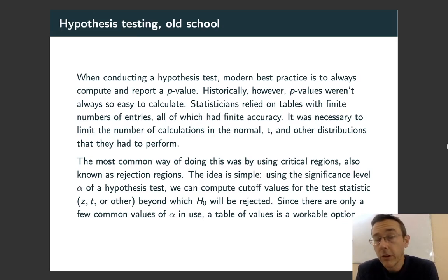The idea of a rejection region or critical region is to flip the process around. Start with that alpha, that significance level. That alpha is going to define a cutoff for your test statistic, call it z* or t* or whatever. And if you go out and get sample data with a sample statistic more extreme than that, that's going to tell you to reject the null hypothesis.